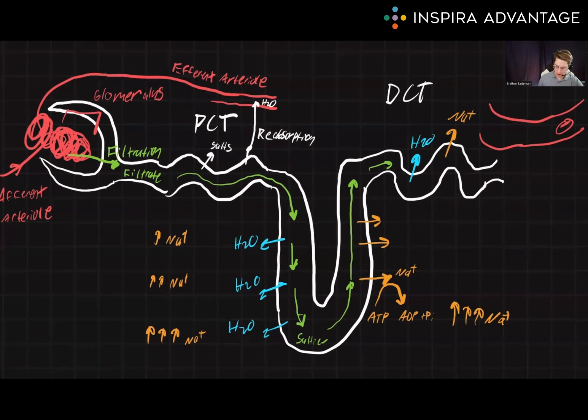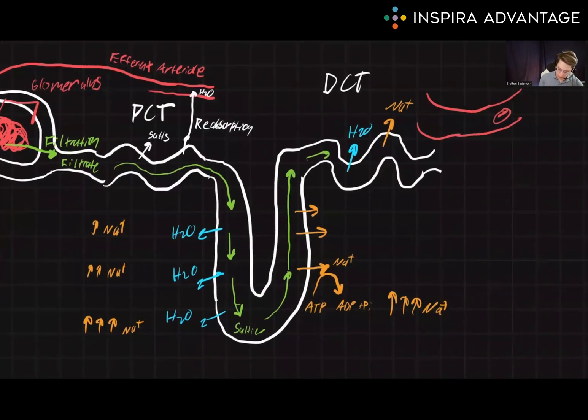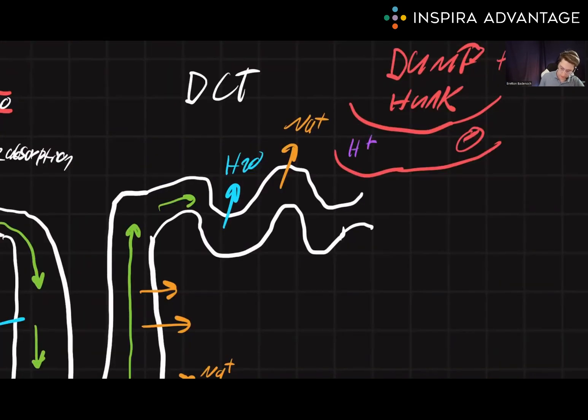Well, what are these toxins? A way to remember them is the acronym DUMP THE HUNK. Things that we're dumping: H+ for H, urea, NH3, and potassium. All of these are going to move into the distal convoluted tubule to soon be excreted.